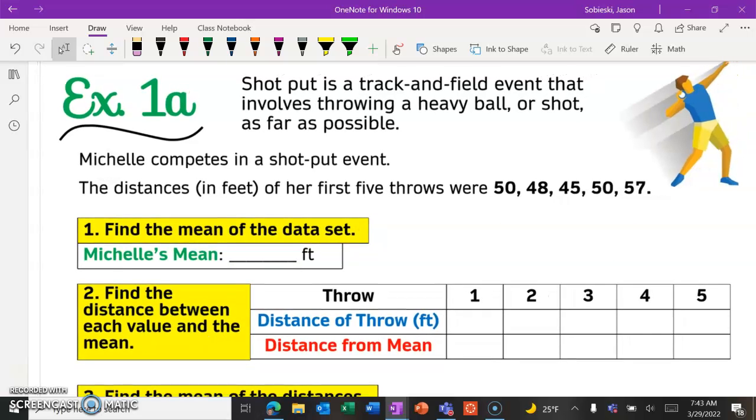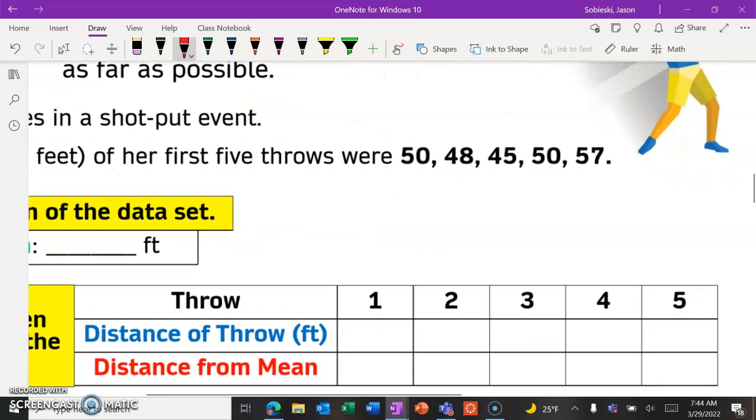Shot put is a track and field event that involves throwing a heavy ball. Michelle competes in this event, and her distances of her first five throws were shown to the right. So what we're going to do, step one, is to find the mean or the average of our data set.